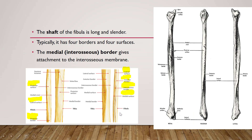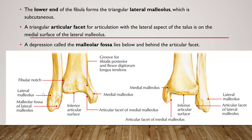The shaft of the fibula is long and cylindrical. It typically has four borders and four surfaces. The borders include the anterior border, the interosseous border — also called the medial border — and additional borders. The medial border, also called the interosseous border, gives attachment to the interosseous membrane.